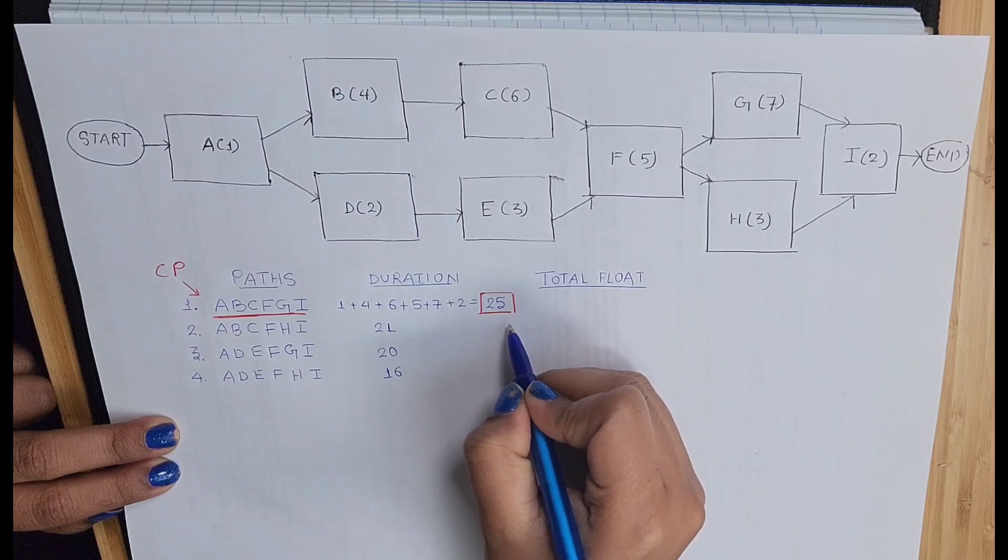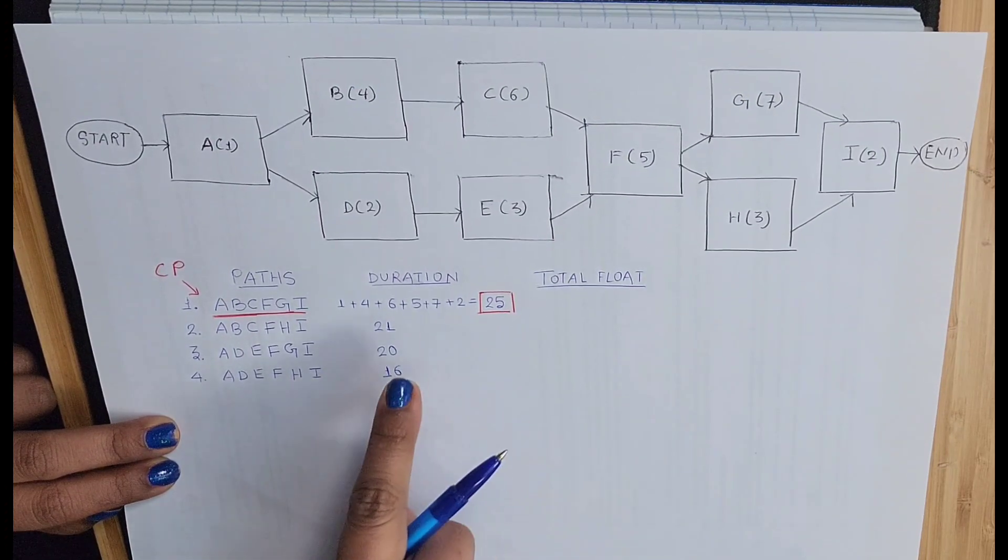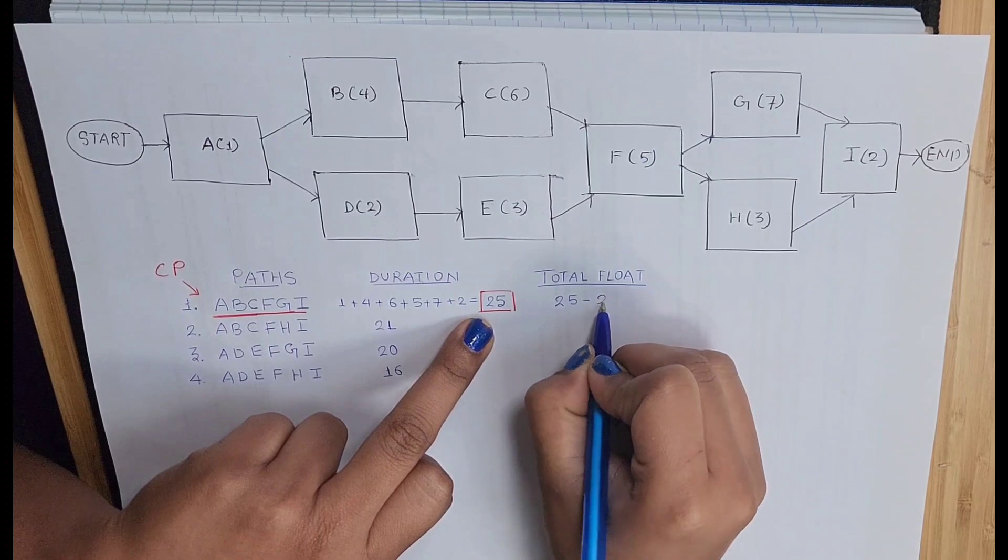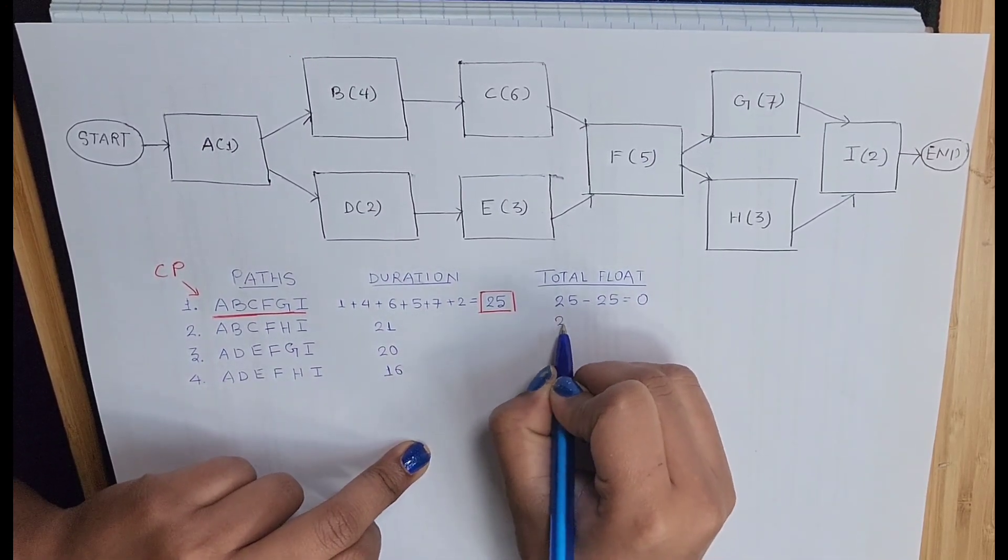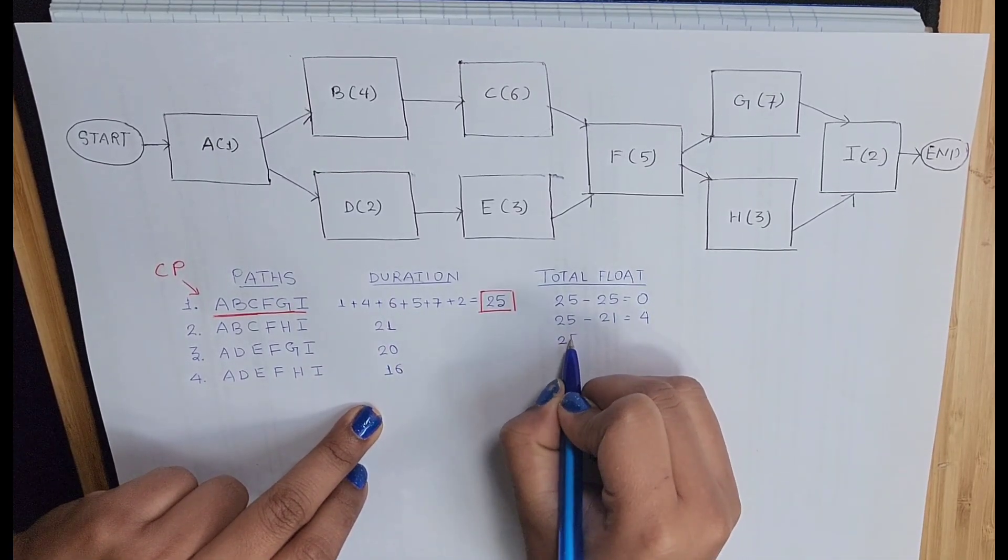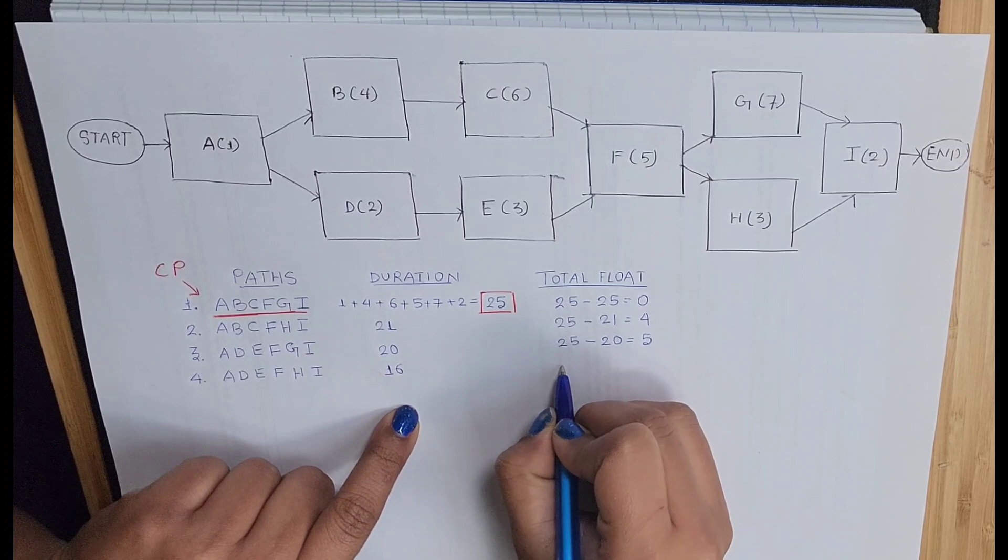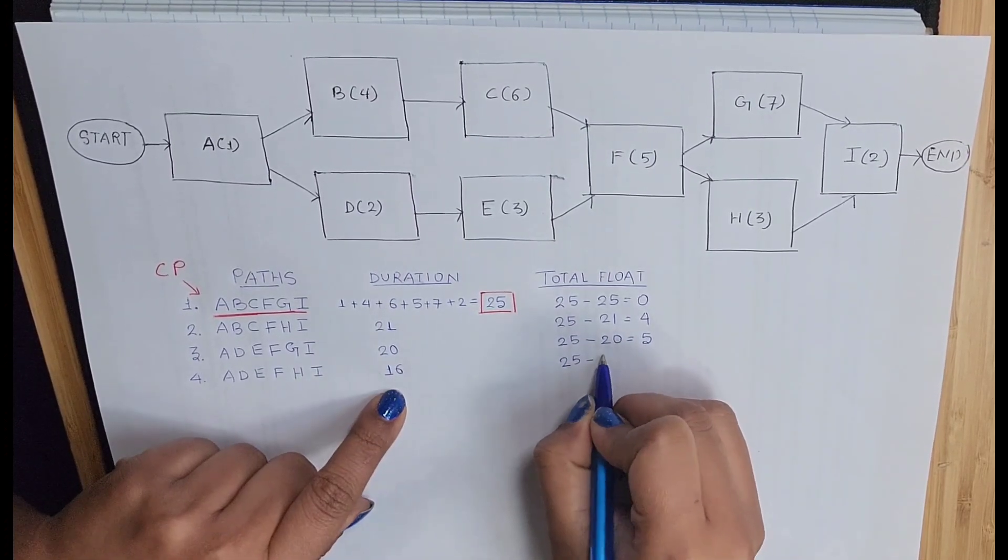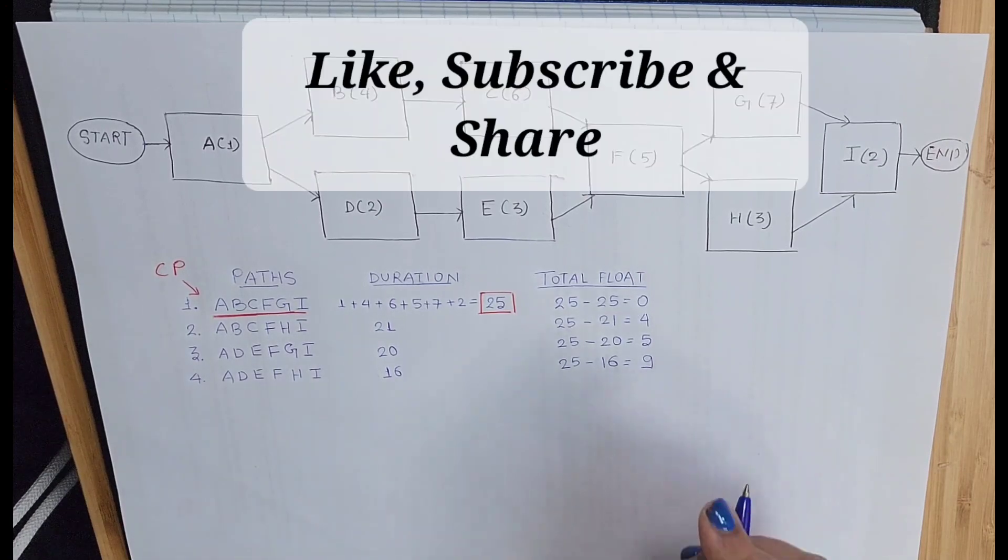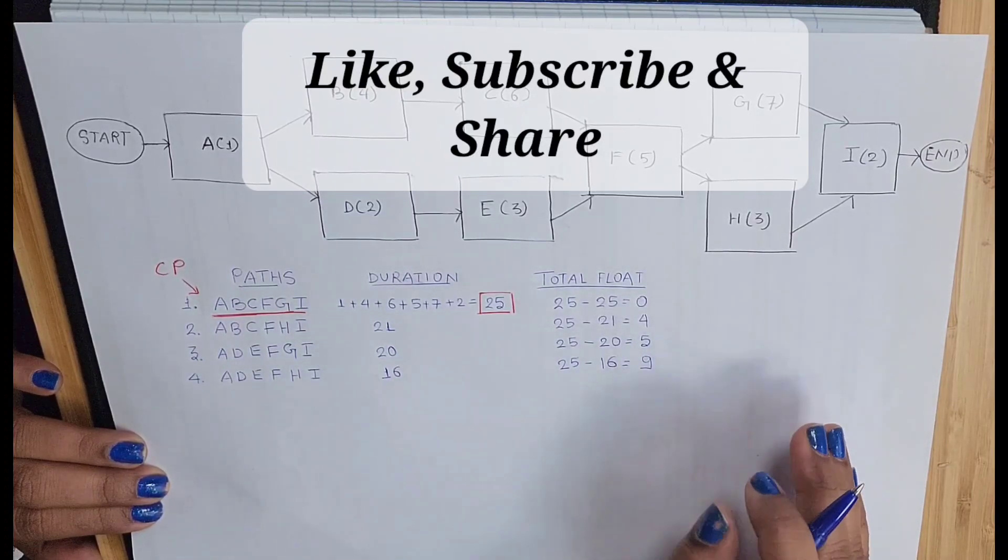So now to calculate the total float, you need to use your critical path duration and you have to subtract all the actual durations of each path. Which means your critical path duration is 25 minus this path, which is again a critical path, so it's 0. Then critical path duration again minus this path has a duration of 21, will give you 4. Then again, critical path is 25, this path has duration 20, will give you 5. And again, critical path duration minus this path has duration of 16 days, so you have 9 days.